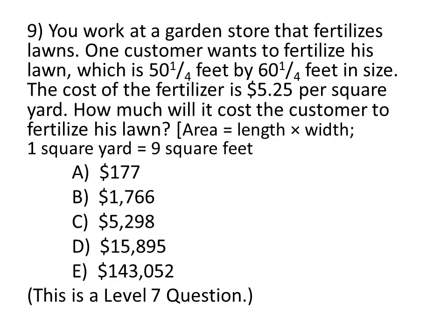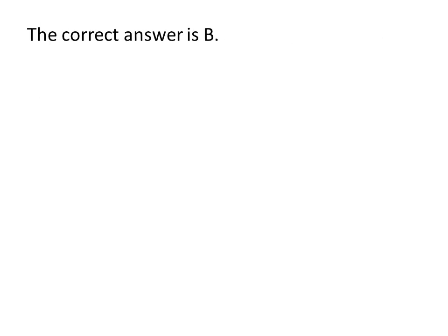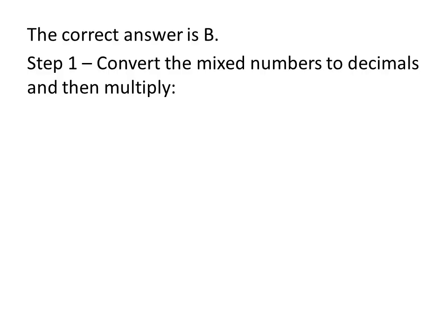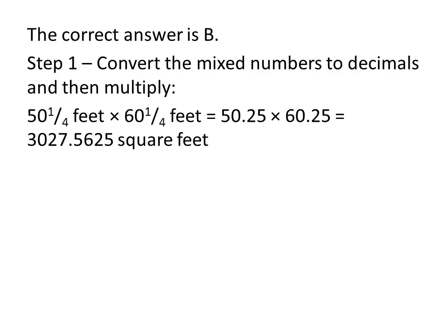The correct answer is B. For the first step, convert the mixed numbers to decimals and then multiply. So, here we have a lawn that measures 50¼ feet by 60¼ feet. Converting that to decimals, we get 50.25 times 60.25. We know that we need to multiply those together to get our square feet, in other words, to get the area of the lawn. So, multiplying those together, we get 3,027.5625 square feet.